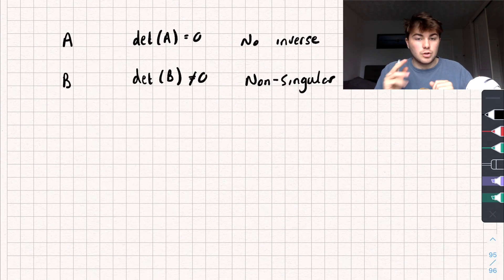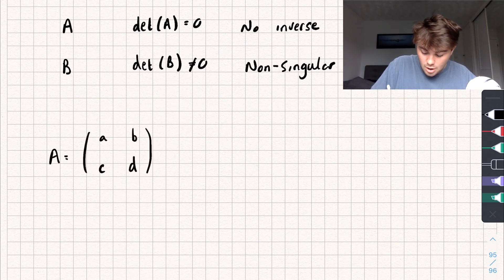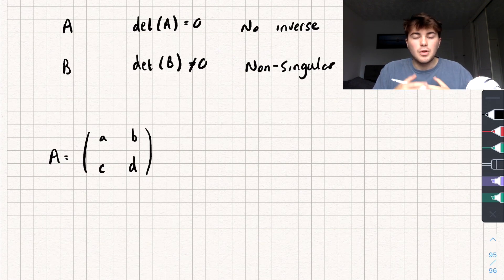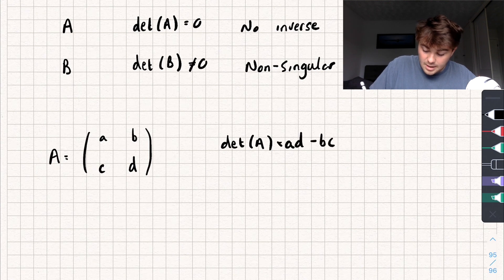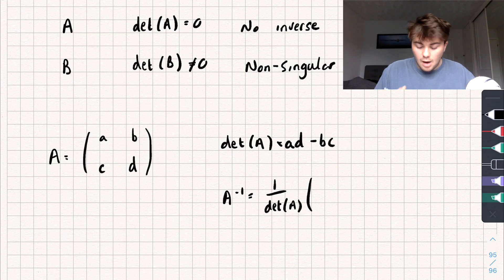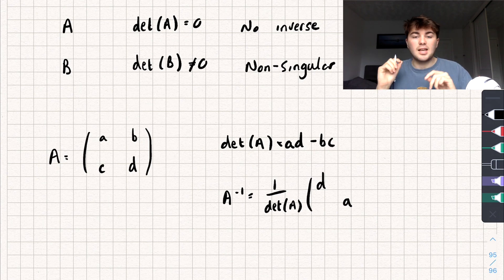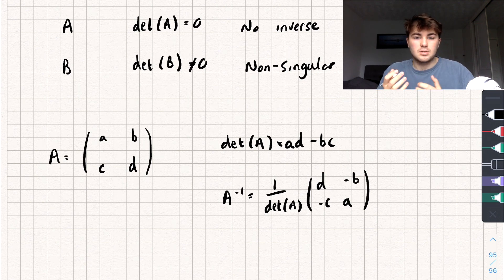So how do we calculate the inverse for a 2x2? Say I had a generic 2x2 matrix A with elements A, B, C, and D. The first thing you always want to do is calculate its determinant, because that will tell you if it has an inverse or not. The determinant of A equals AD minus BC. The inverse of A is equal to 1 over the determinant of A, multiplied by a new matrix where we swap elements A and D, and take the negatives of elements B and C — giving us negative B and negative C. This gives us our inverse matrix.